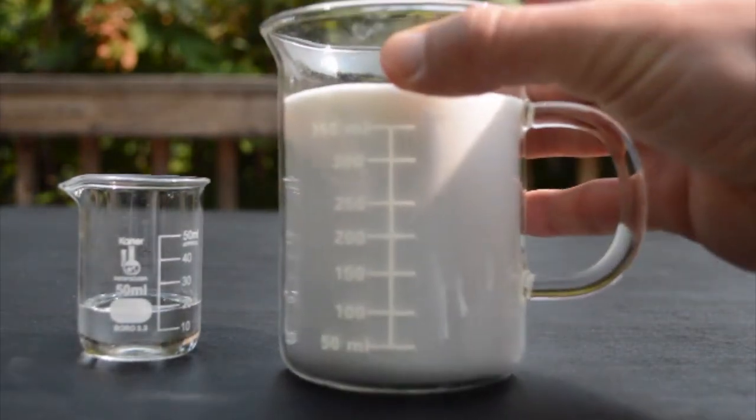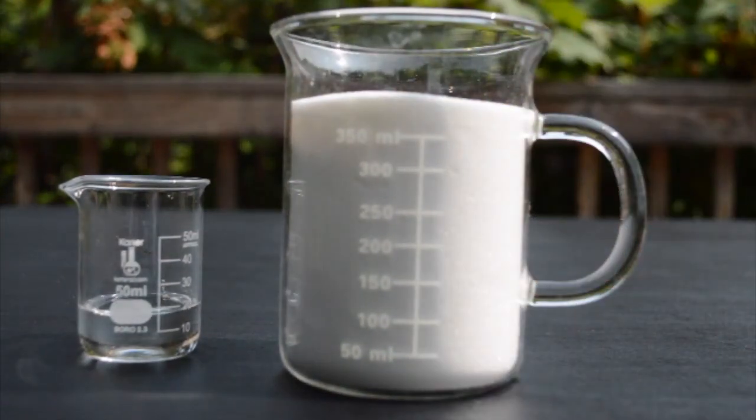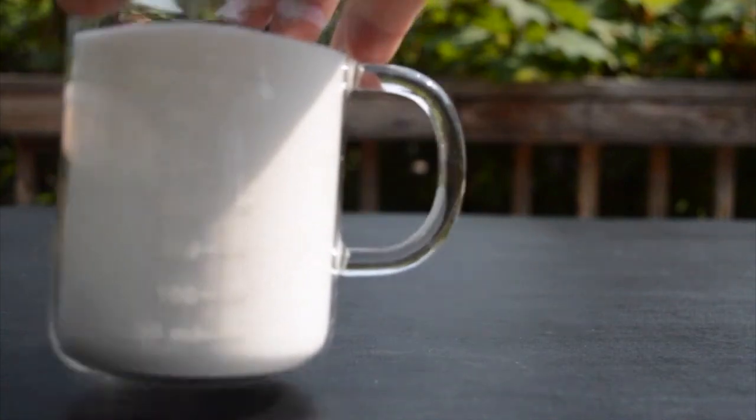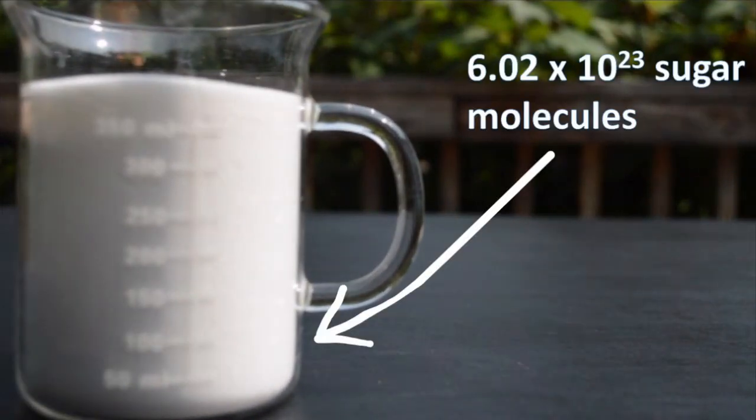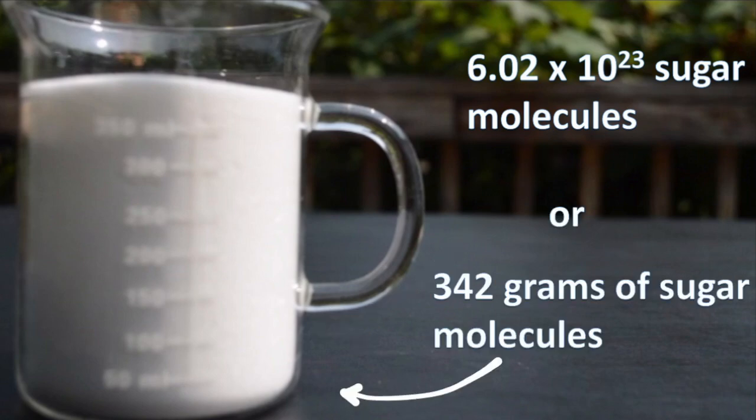And here's a mole of sugar. Sugar is a completely different molecule and it's way bigger than a water molecule. So 6.02 times 10 to the 23 sugar molecules has a mass of 342 grams. That's 342 grams per mole.